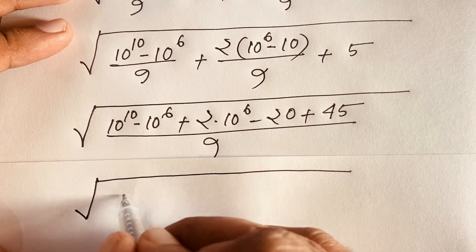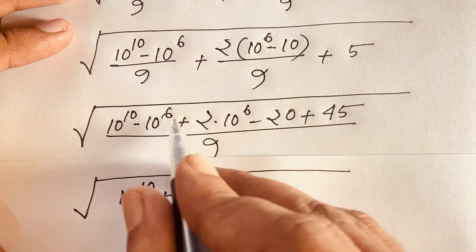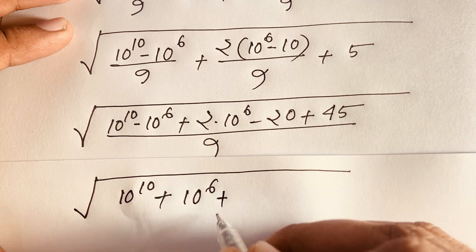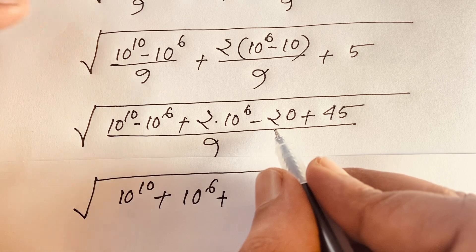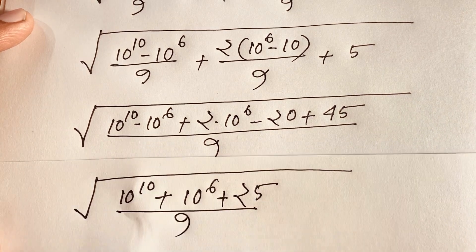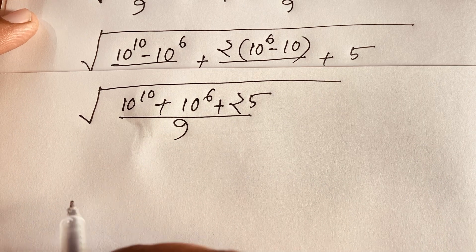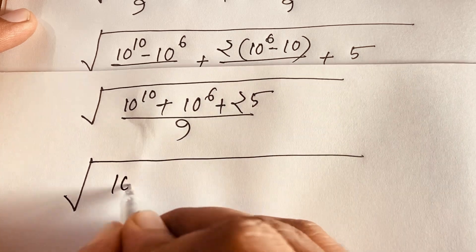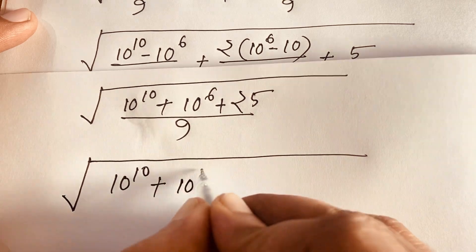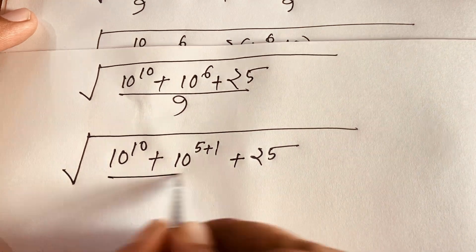Under the square root I can see easily: 10 to the power 10, plus (2 times 10 to the power 6 minus 10 to the power 6) equals 1 times 10 to the power 6, minus — and 45 minus 20 is 25 — so we have 10 to the power 10 plus 10 to the power 6 plus 25, over 9. So under the square root: 10 to the power 10 plus 10 to the power 5 times (10 plus 1) plus 25 over 9.